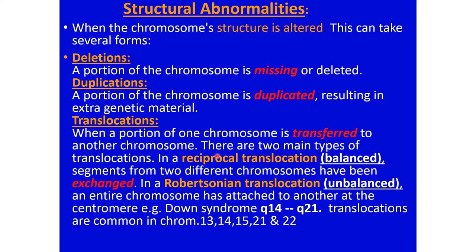In a balanced or reciprocal translocation, a specific amount of genetic material is transferred from one chromosome to another, and in response, the same amount is transferred back — this is called reciprocal translocation. In a Robertsonian or unbalanced translocation, an entire chromosome attaches to another at the centromere. For example, in Down syndrome, the long arm of chromosome 14 detaches from its original chromosome and attaches to the long arm of chromosome 21.